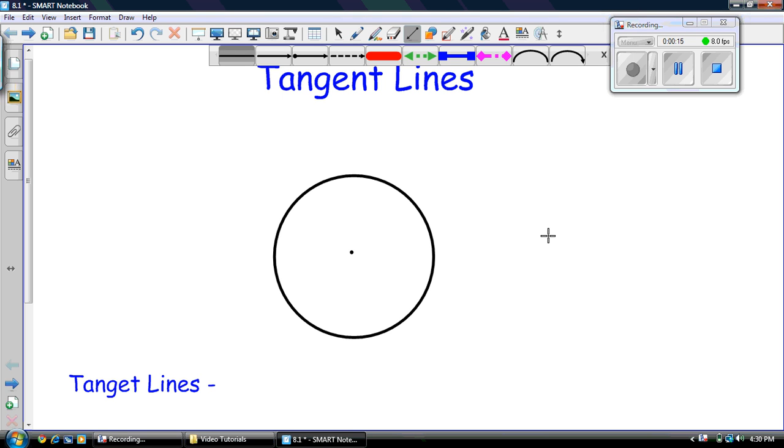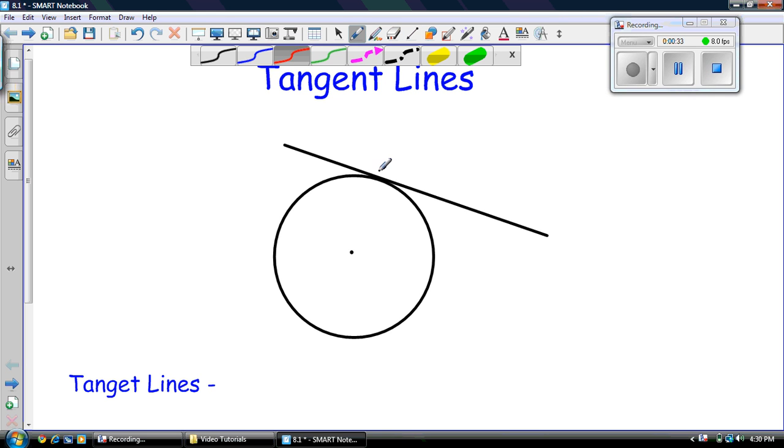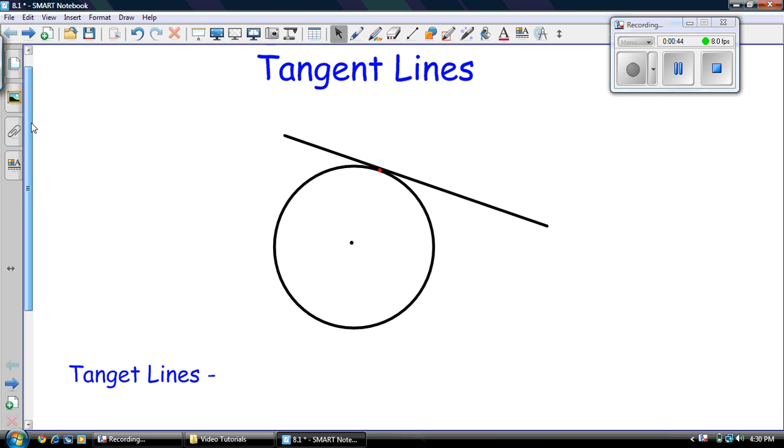If we have a line like this and it goes through the circle, it touches two points. Well, a tangent line is something very special. A tangent line touches the circle at only one point. So if we could zoom up on this thing right now, right in this area right here, this line here would touch the circle at exactly one point. And we can identify that point.